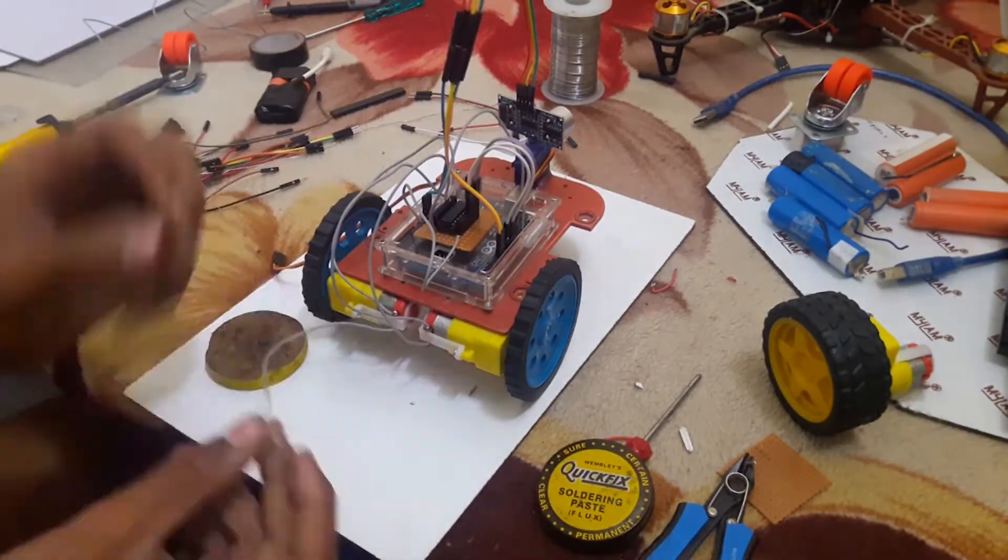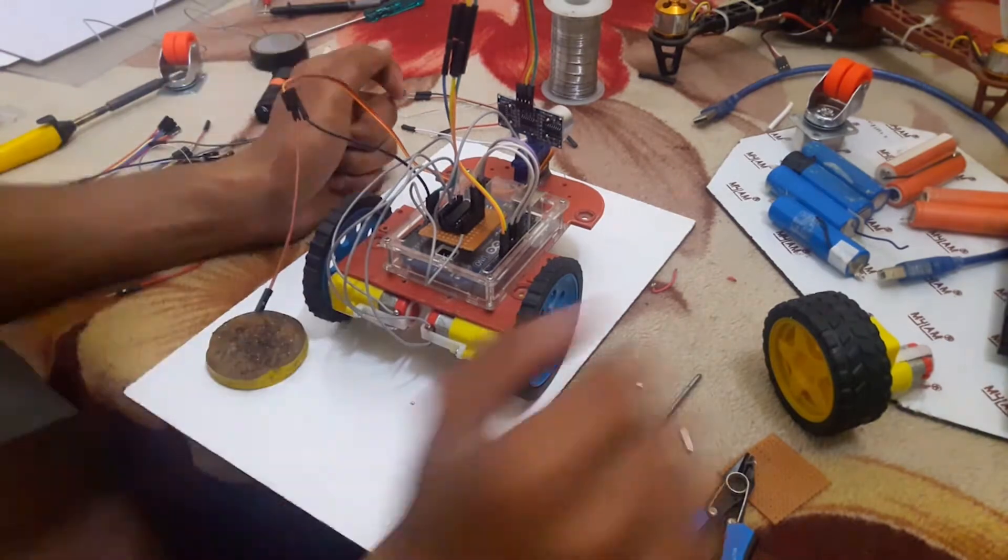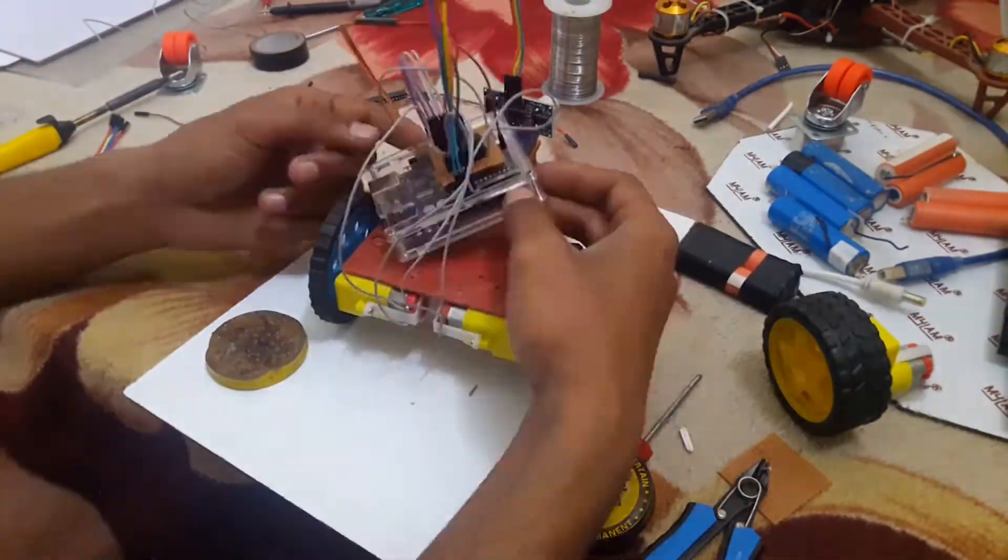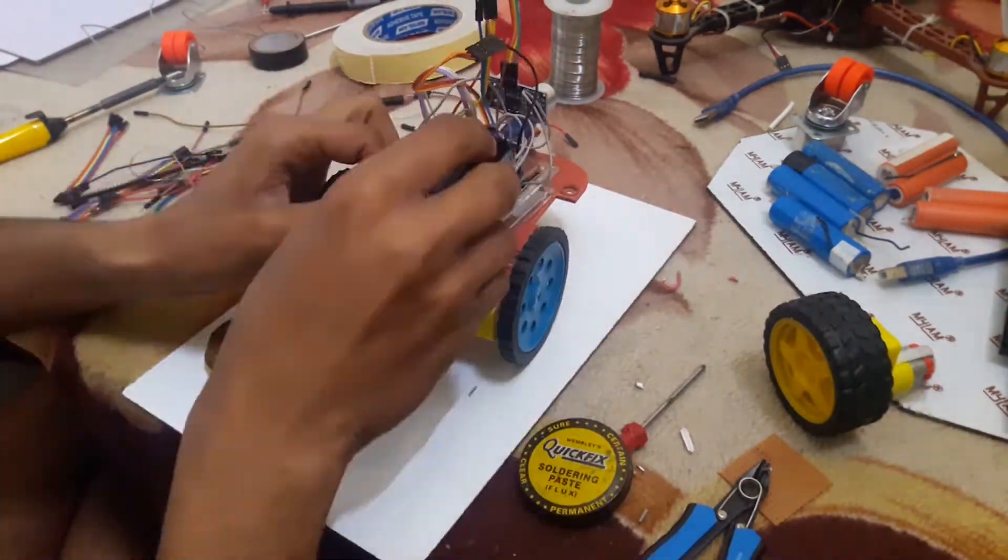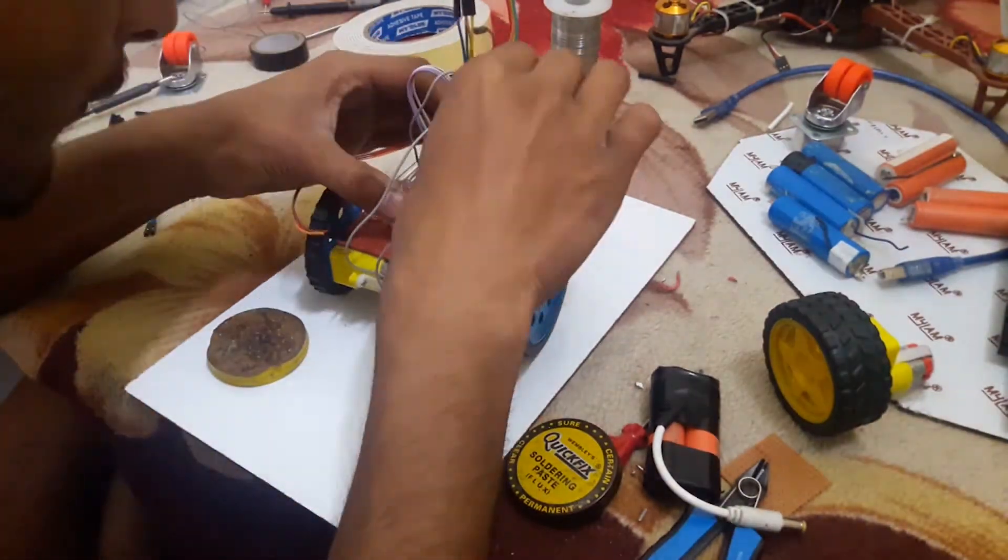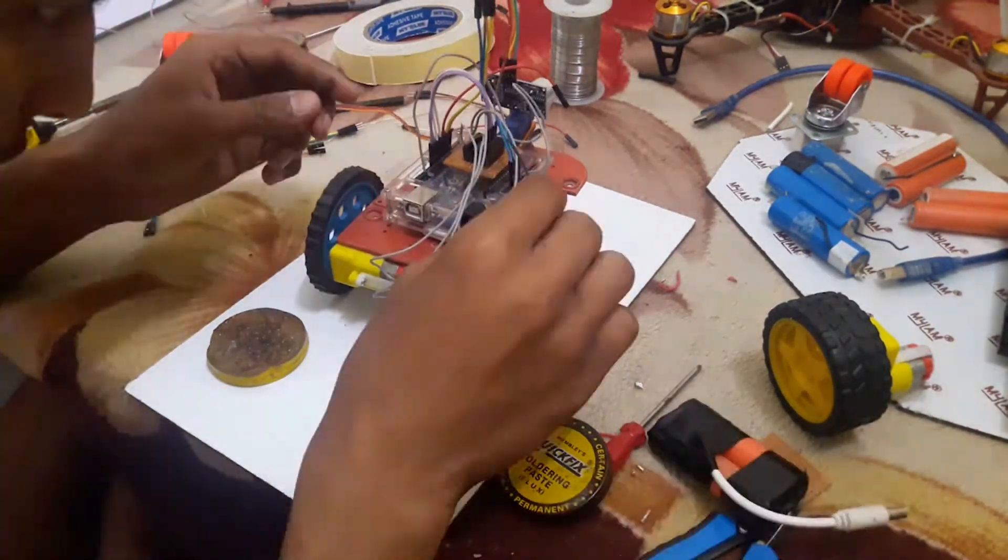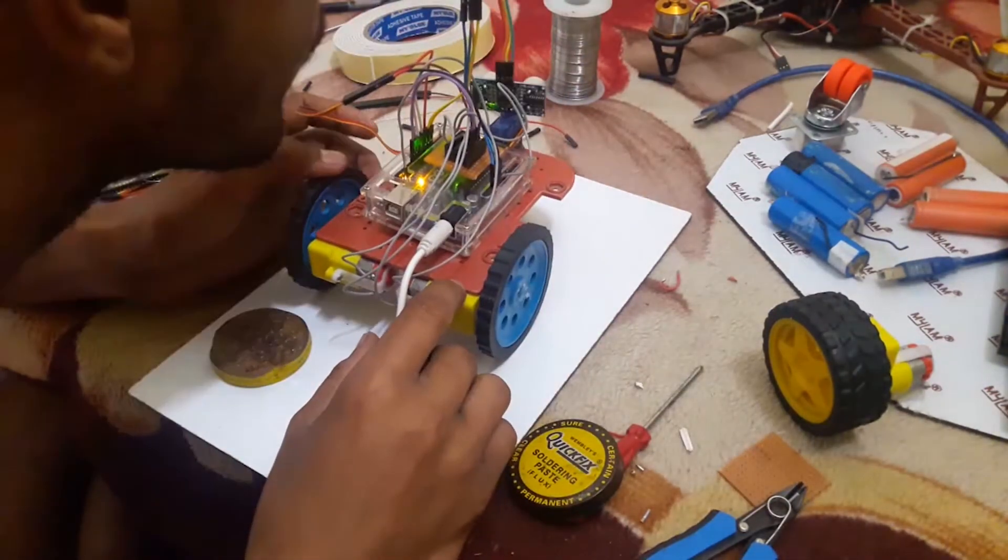You have to connect the power to the L293D, the signal wires, the output to the motors. Then after placing all things it is done. After some connections let's check it. It is perfect now.